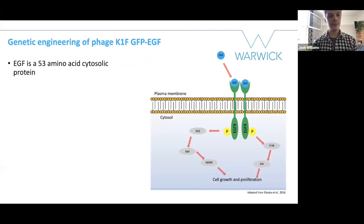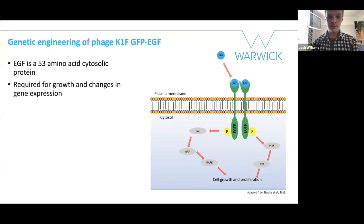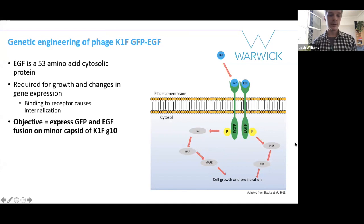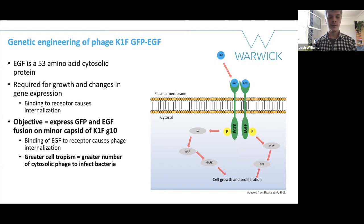For genetic engineering of the GFP-EGF fusion, I will introduce epidermal growth factor, which is a 53 amino acid cytokine protein required for growth and changes in gene expression through the RAS, RAF, and MAPK pathways, and also the PI3K pathway. The most important thing is the binding of EGF to its cognate receptor, as shown in the diagram on the right, causing it to internalize by clathrin-mediated endocytosis. The objective is to express both GFP, so the phage can be visualized, and EGF, to smuggle the phage inside human cells on the minor capsid protein G10. In theory, this should enhance cell tropism of the phage to human cells, resulting in a greater number of cytosolic phage to infect bacteria and more efficiently clear intracellular infections.